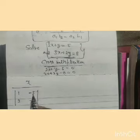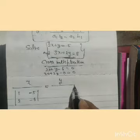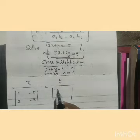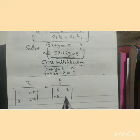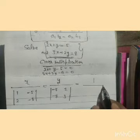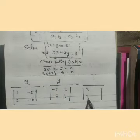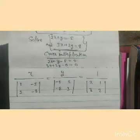Below x we write the coefficient of y and constant terms. Constant terms are minus 5 and minus 8. Below y we write the coefficient of x: 2 and 3. Below 1 we have coefficient of x (2 and 3) and coefficient of y (1 and 2).